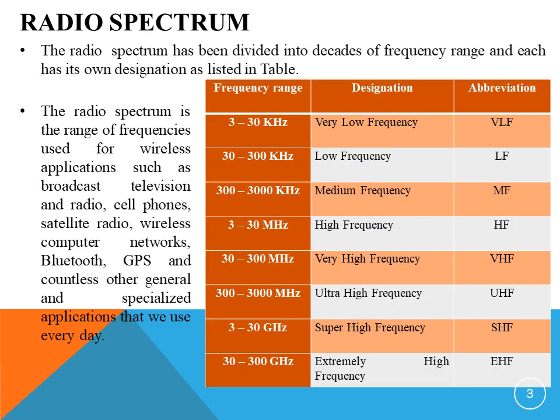Radio spectrum is the range of frequencies used for wireless applications such as broadcast TV and radio, cell phones, satellite radio, wireless networks, Bluetooth, GPS, and a number of general and specialized applications in day-to-day life. This table clearly shows how radio spectrum has been divided into decades of frequency ranges with its own designations.